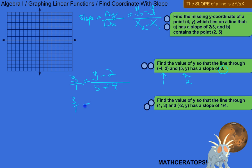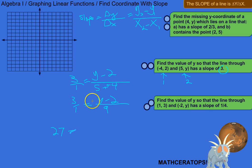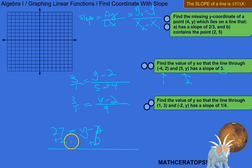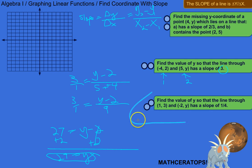Since we have 3/1 equal to (y minus 2) over 9, we cross-multiply: 3 times 9 is 27, equal to 1 times (y minus 2), which is y minus 2. To get y by itself, we add 2 to both sides: 27 plus 2 is 29, so y equals 29. The value of y for this point would be 29. I'll let you try the third one on your own.